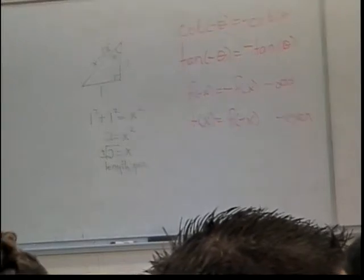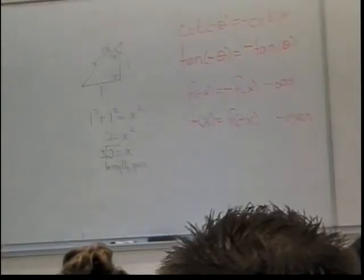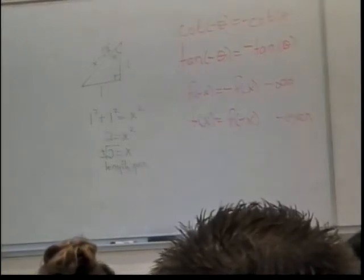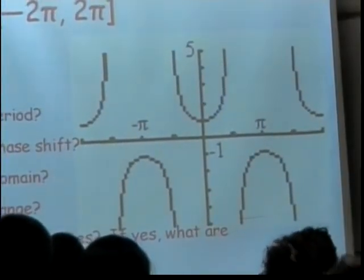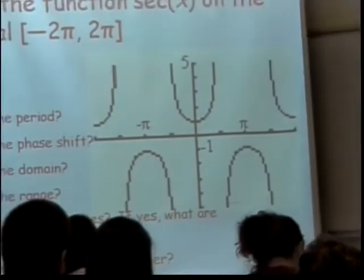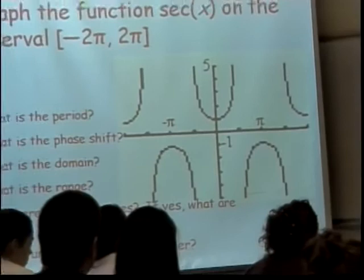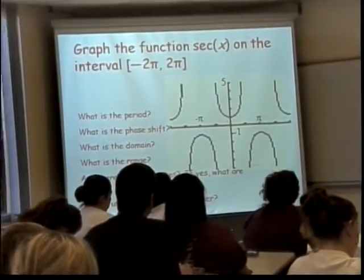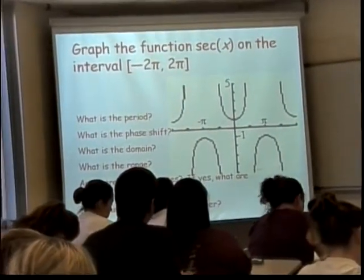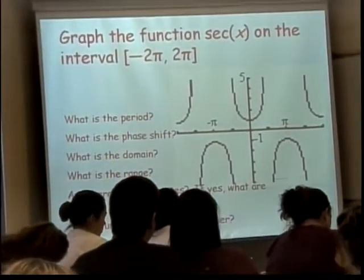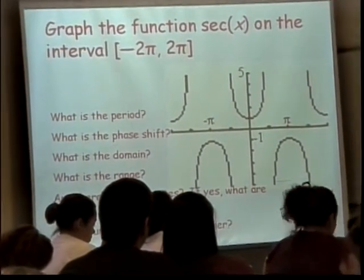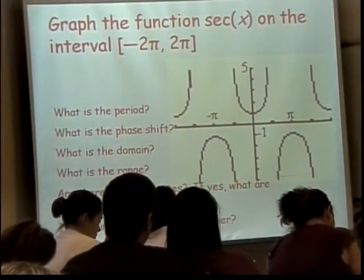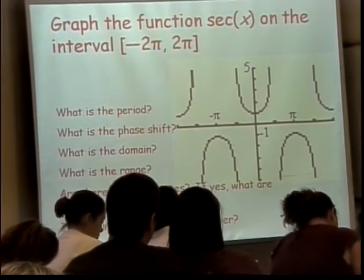I think I'm doing secant next. There's the secant function. That looks different. Secant is defined as one over the cosine in terms of the other trig functions — one over the cosine.